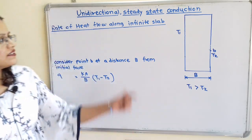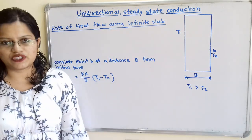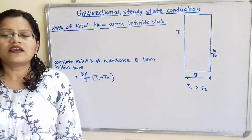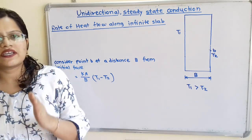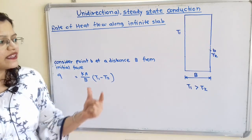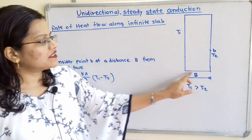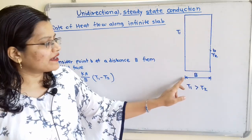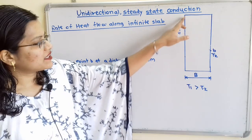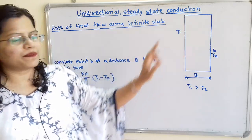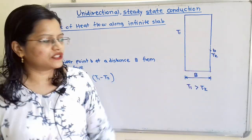This is the infinite slab. We will consider one slab having length and width infinite, with thickness capital B. In this two-dimensional diagram, the thickness capital B is shown. The initial face has temperature T1 and the other face has temperature T2.